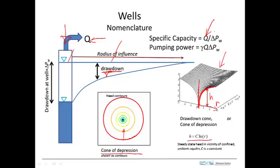The flow rate divided by the drawdown at the well is called the specific capacity. The drawdown at the well is labeled delta P sub W. The power required to pump the well depends on the flow rate and the drawdown at the well — it's proportional to the product of these two times the unit weight of the water. So the power depends on how rapidly we pump and how much drawdown occurs, essentially how high we have to lift the water.